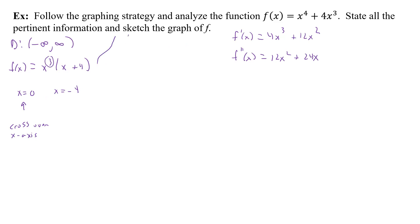Because the multiplicity at x = 0 is three (an odd number higher than one), the graph crosses over but is flatter at that point — like an x³ shape. At x = 0, f(0) = 0, so it crosses at (0, 0) and is somewhat flat there rather than crossing sharply.